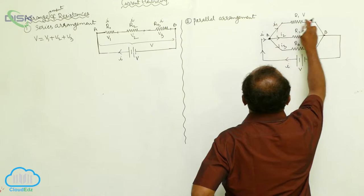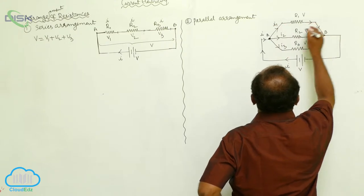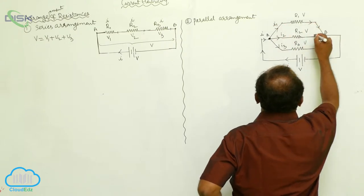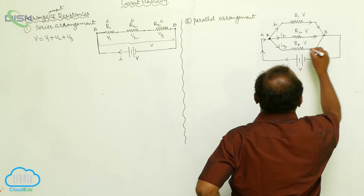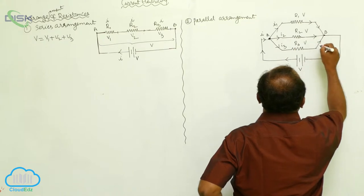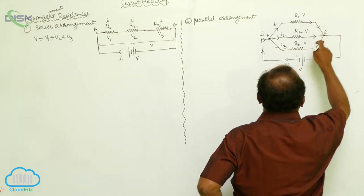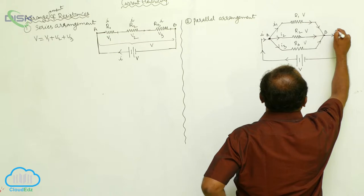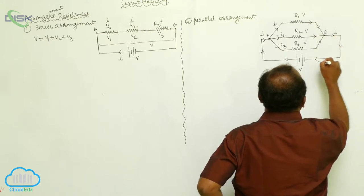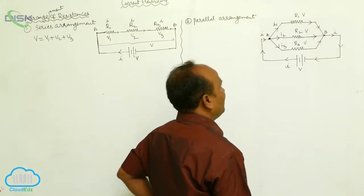I1 current is passing through like this, I2 current is passing through like this, I3 current is passing through like this. Both are combined to form I, and it reaches the negative terminal.